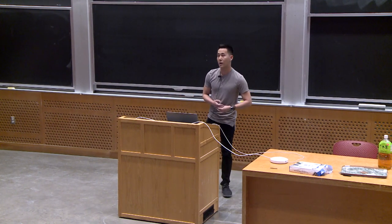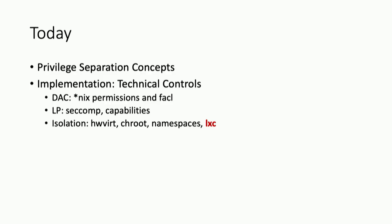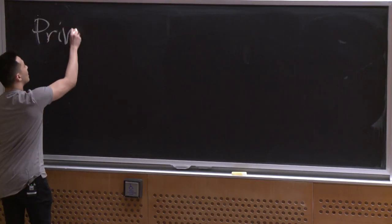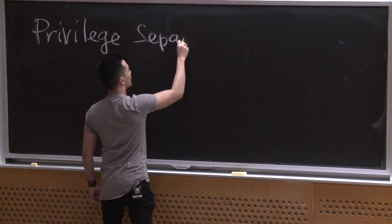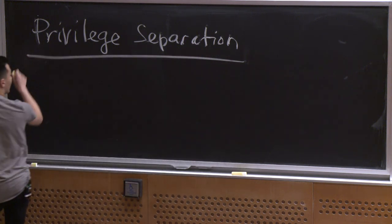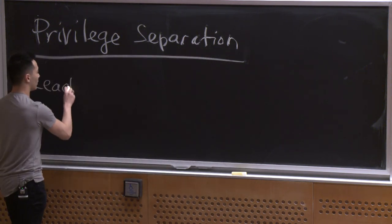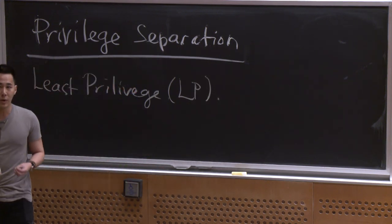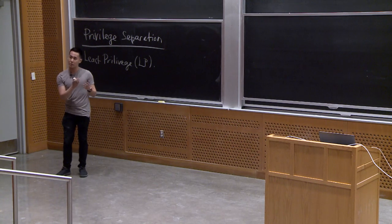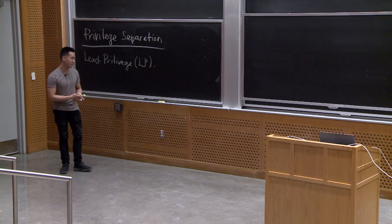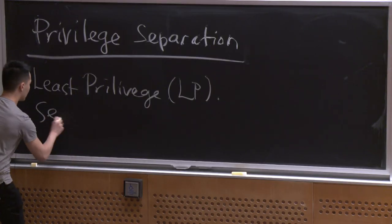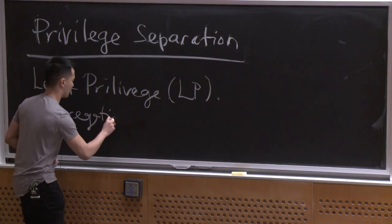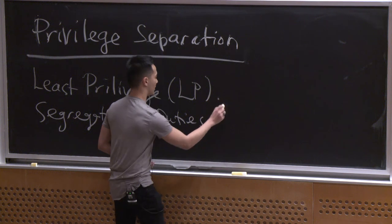Today we're going to recap some privilege separation concepts. Yesterday we covered privilege separation. What are the two key concepts? We know we should always employ the concept of least privilege, which means you only assign the minimal set of privileges that a particular process or user requires to carry out its function. The second important concept is segregation of duties, commonly known as SOD.